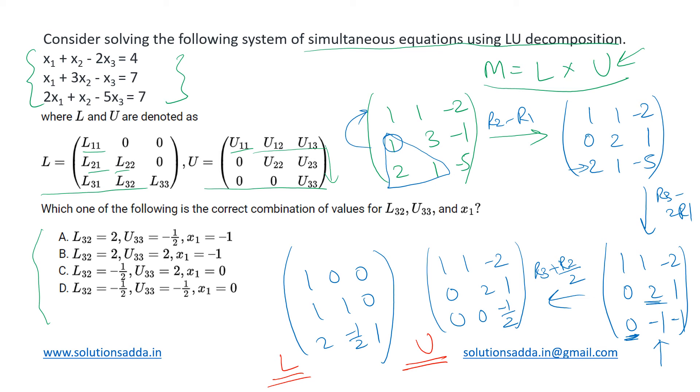Now that we have got these two, let us check which of the given combination is correct for L32, U33 and x1. Let us see where this L32 is. It is at this position. So there we have -1/2. Next is U33, means the last position. There also we have -1/2.